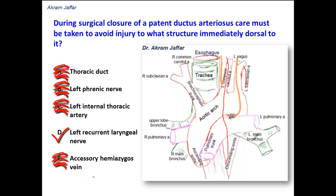It is not the accessory hemiazygos vein — like the azygos system of veins, it is located on the posterior wall of the thorax, much farther away from this location. So it is the left recurrent laryngeal nerve, which is a branch of the vagus nerve. The vagus nerve gives off the left recurrent laryngeal nerve, then passes behind the root of the lung and continues down into the abdomen. The left recurrent laryngeal nerve passes dorsal to the ductus arteriosus and then ascends to the larynx in the groove between the trachea and esophagus.